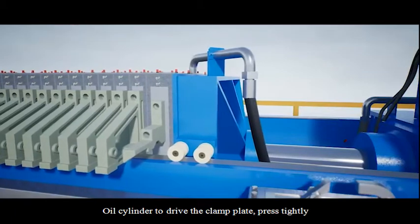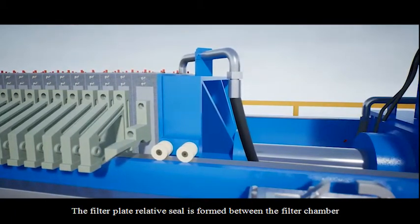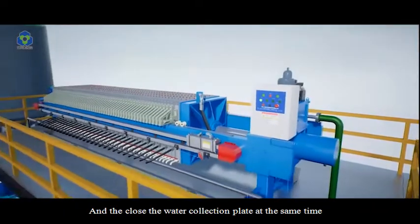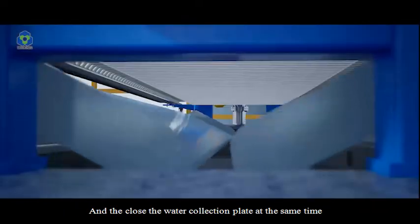The oil cylinder drives the clamp plate to press tightly. The filter plate relative seal is formed between the filter chamber, and the water collection plate closes at the same time.